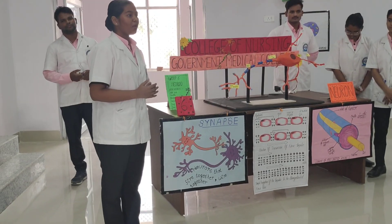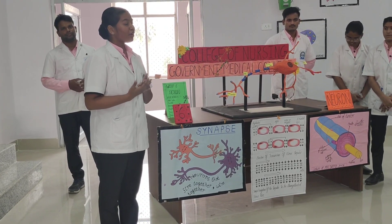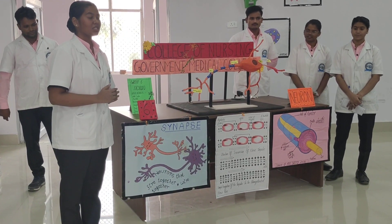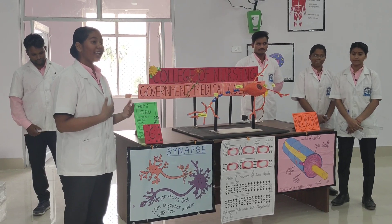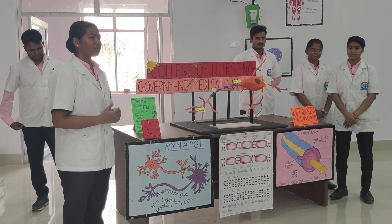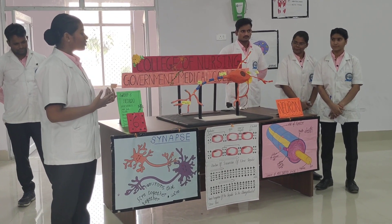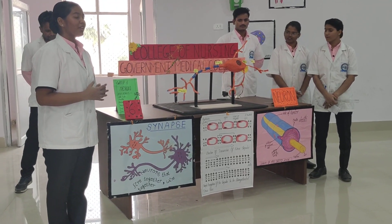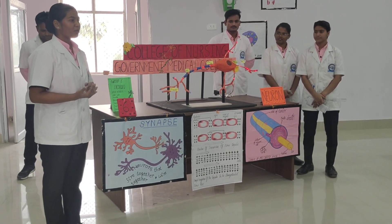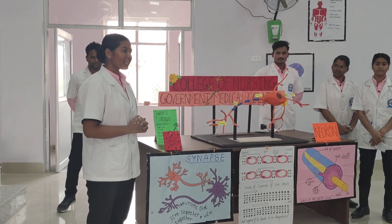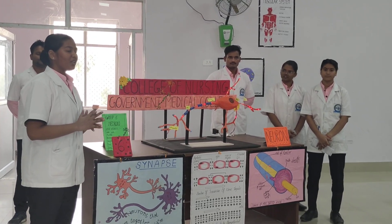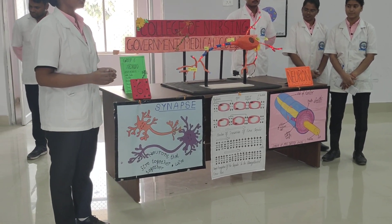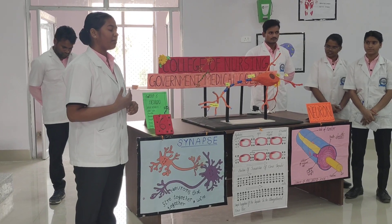If we classify synapses on a functional basis, they may be electrical synapses, where there is direct transmission of ions from the first neuron to the other neuron so that the electrical potential is reached, or chemical synapses, where the transmission occurs through chemical transmitters.